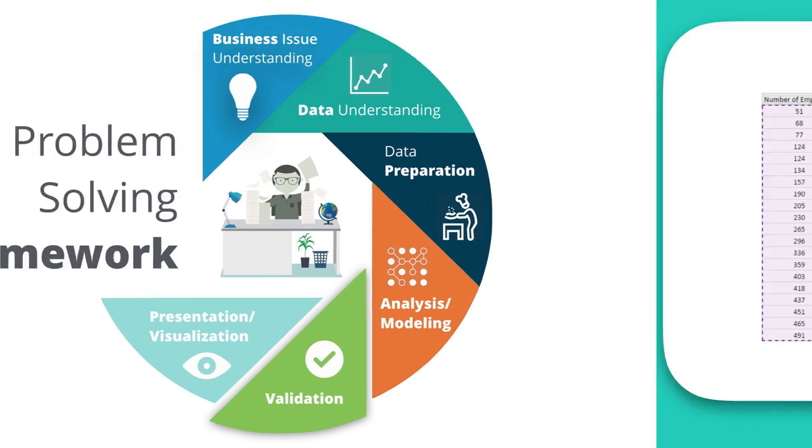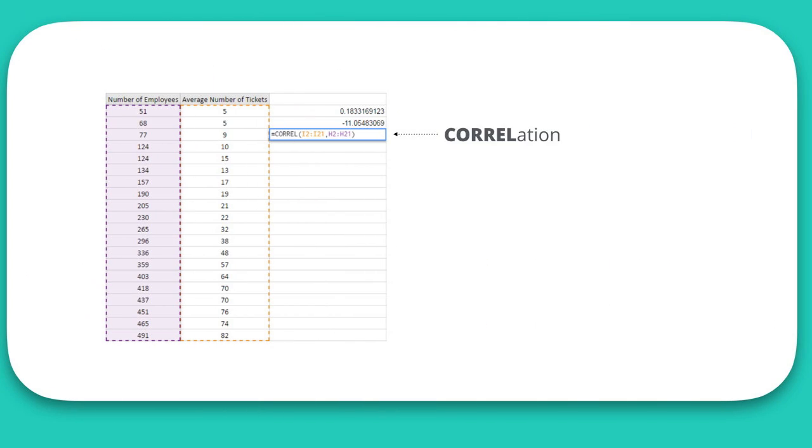Using the corel function, we can calculate the correlation coefficient of the data set, or the variable r. The range of r is from minus 1 to plus 1.